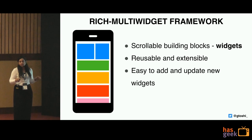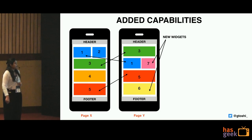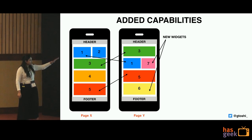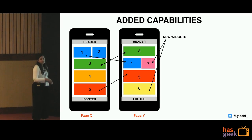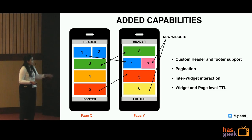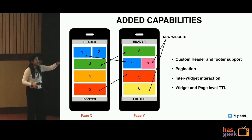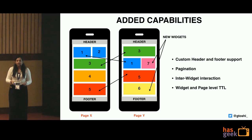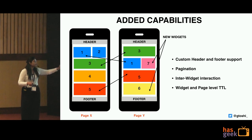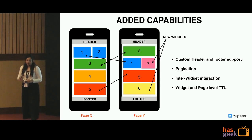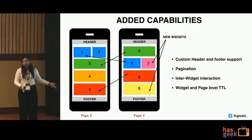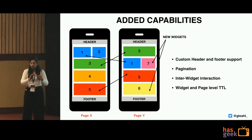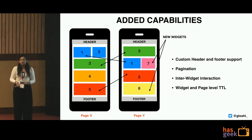What makes this a rich multi-widget framework? For example, these are two pages — page X and page Y — and widgets enter in a horizontal or staggered layout. A page may have a custom header and footer. We have custom header and footer support, you can reuse widgets across pages and add new ones. We also support inter-widget interaction, and to optimize the payload on the wire, we give time-to-live to these widgets as well as the page. The problem I want to address: if a product manager or stakeholder wants UI changes or experiments, they should be able to go to a configurable console, change the page layout, and the UI should change without any UI developer intervention.